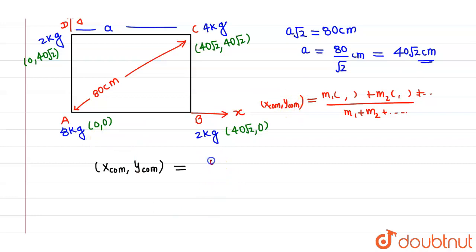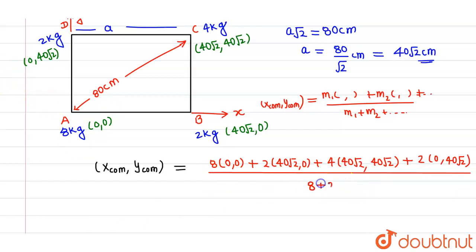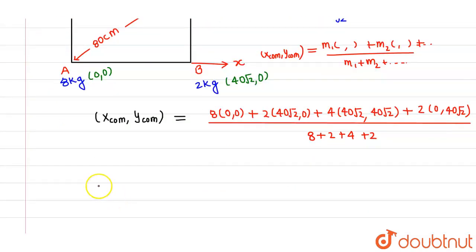Now, in this case, the first mass which is 8 kg placed at (0,0), the second mass which is 2 kg placed at (40√2, 0), the third mass which is 4 kg is placed at (40√2, 40√2), and the fourth mass which is 2 kg is placed at (0, 40√2), divided by the total mass. And the total mass is 8 plus 2 plus 4 plus 2. Now if I calculate this, for x_com we will be having: 0 from here, 80√2 plus 160√2, and from last again 0.